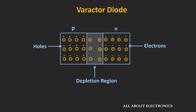The varactor diode is also one kind of P-N junction diode. In a P-N junction diode, a depletion region forms at the junction where the P-type and N-type materials meet. The P-type material contains an excessive amount of holes, while the N-type material contains electrons. The depletion region is depleted of charge carriers. In this way, the P-N junction diode behaves like a capacitor — the P-type and N-type regions act like conducting plates, while the depletion region acts like a dielectric medium.